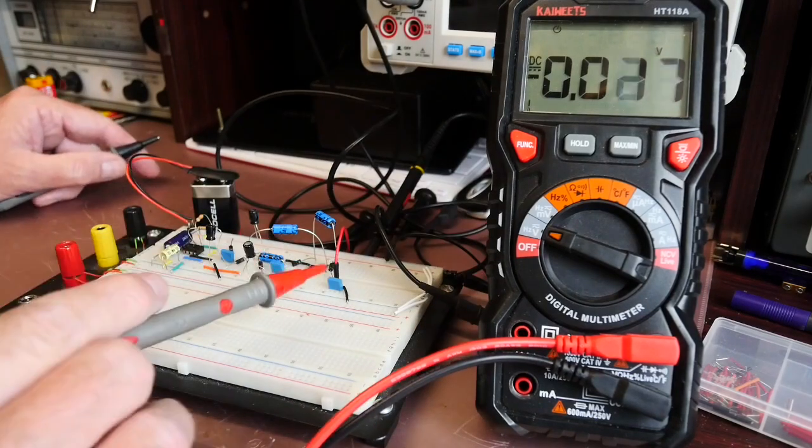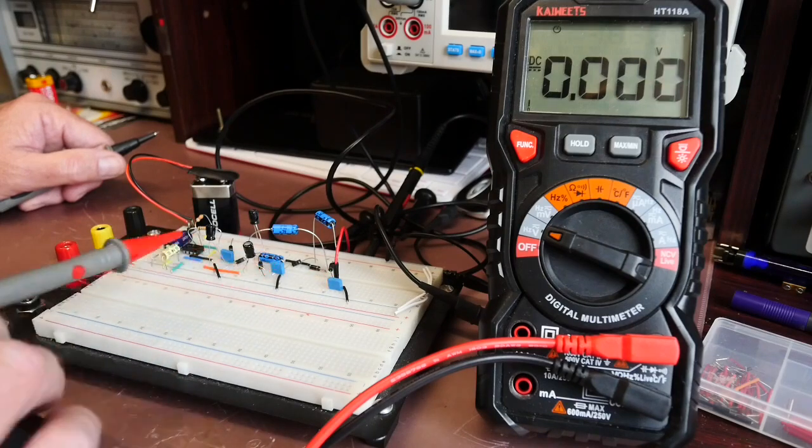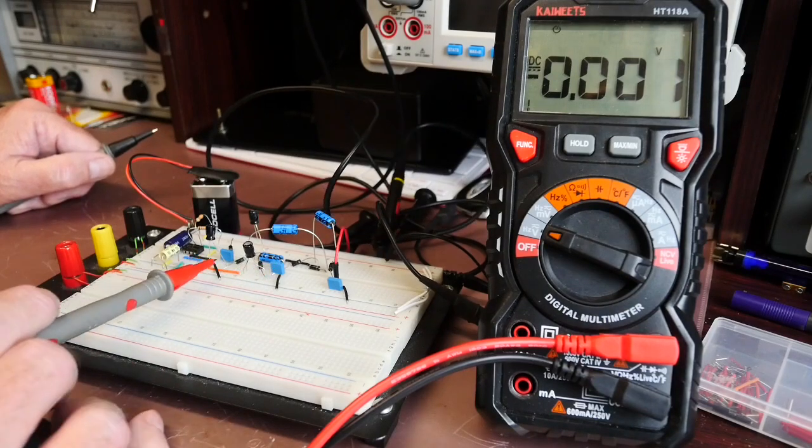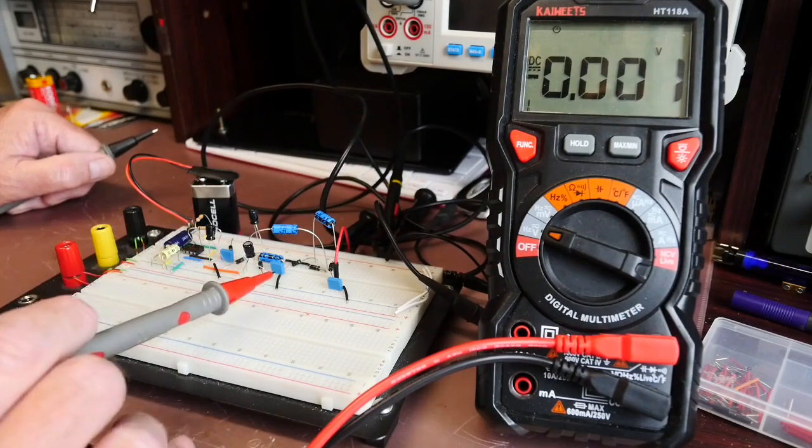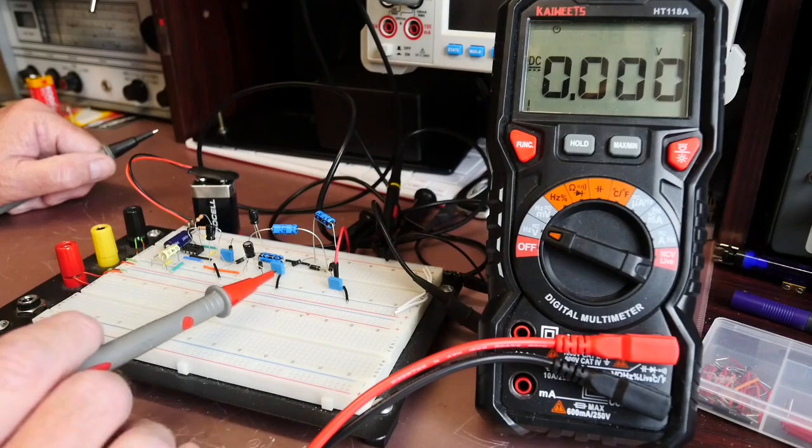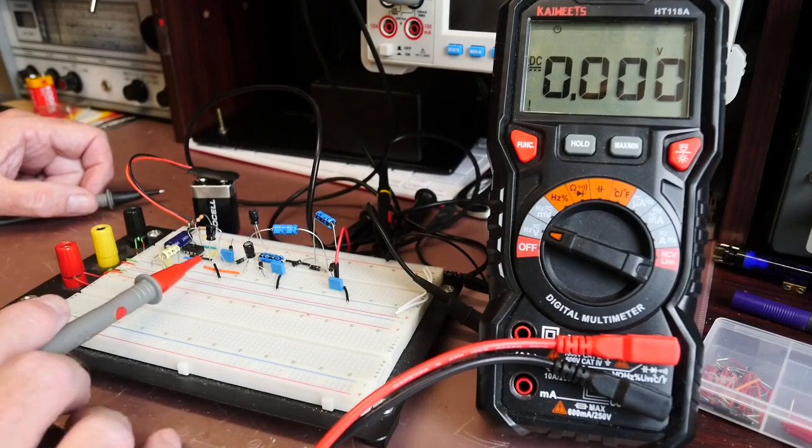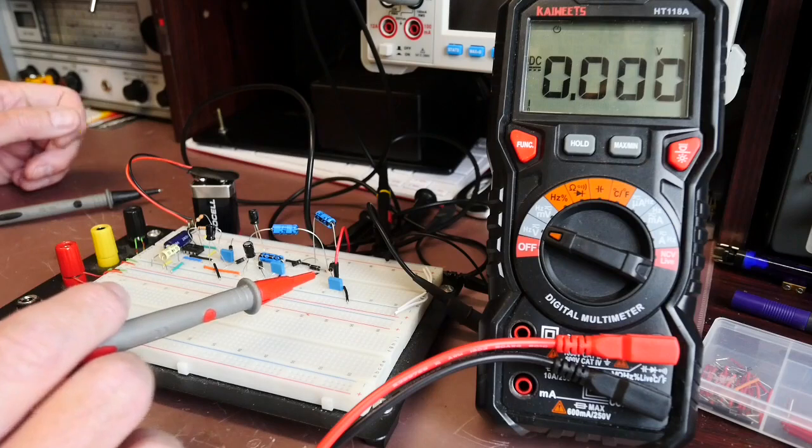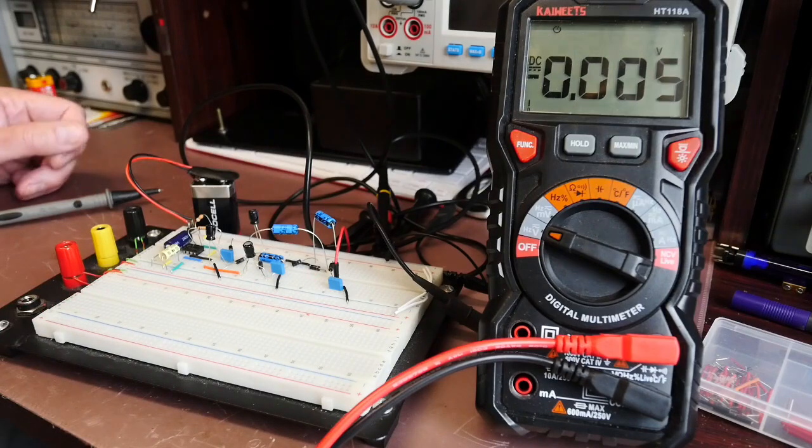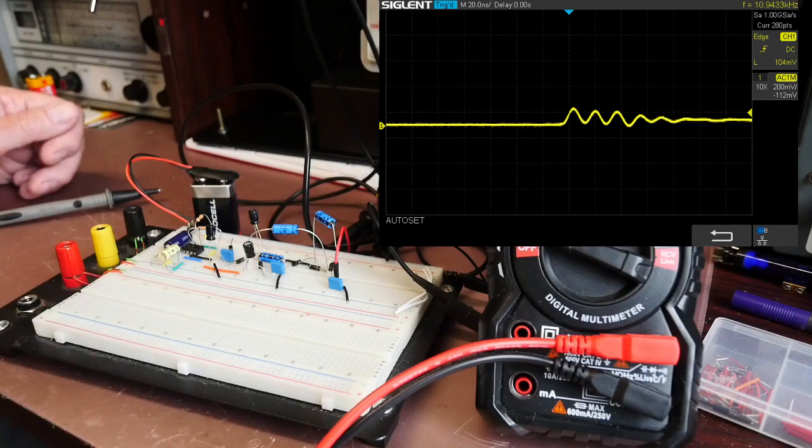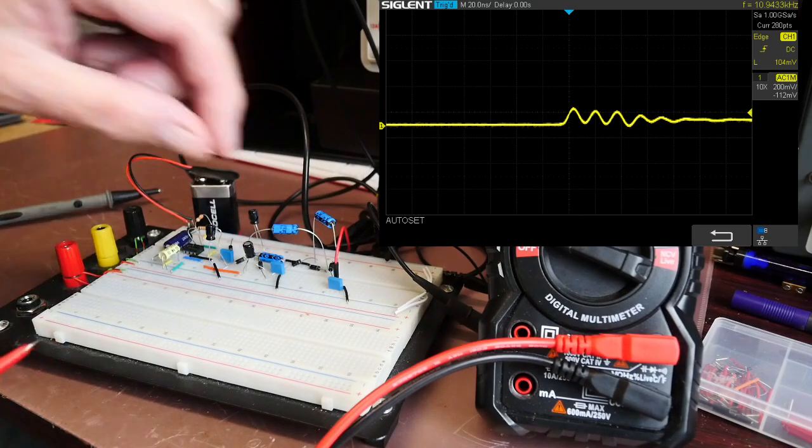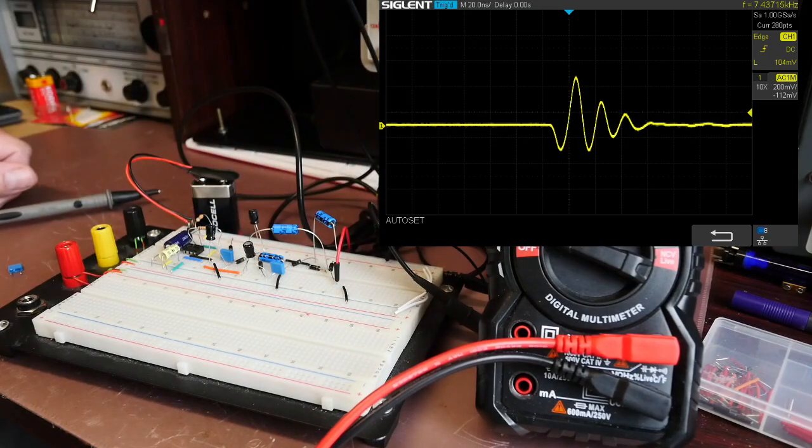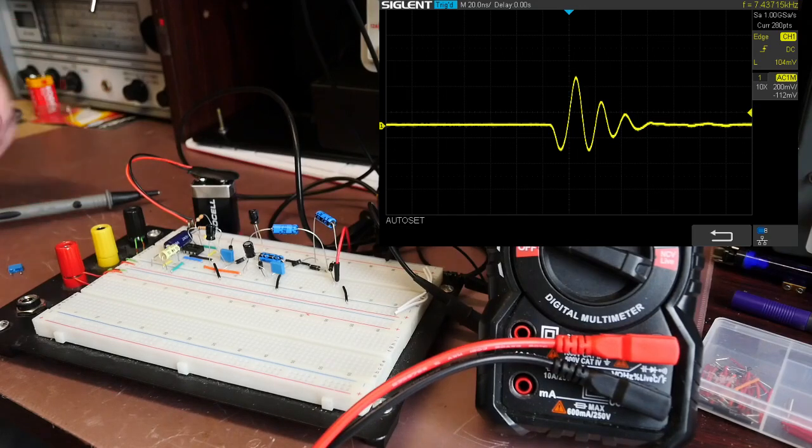So the astute amongst you might have noticed that there's 300 nanofarad capacitors here which are actually connected between the output of each voltage multiplication stage and ground and that's just smoothing out some of the switching noise that's going on as the pulses from the 555 come through. Here are a couple of shots from the scope, this is with the capacitors installed and this one is I'll remove that first capacitor and that's how it looks with that final capacitor removed.